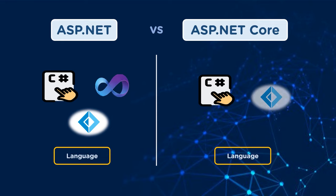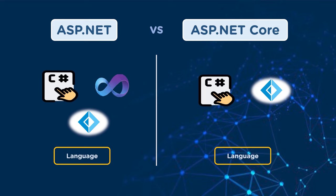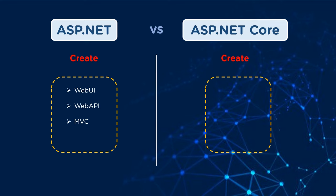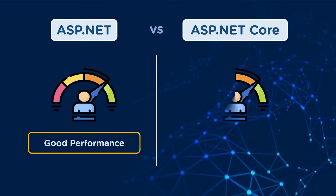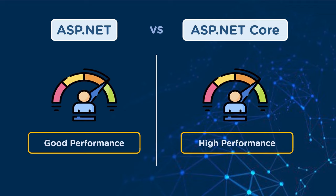Languages that ASP.NET supports are C#, F#, and Visual Basic .NET, whereas ASP.NET Core uses C# and F#. In terms of application types, using ASP.NET we can create web user interface applications, web APIs, MVC applications, and web pages.